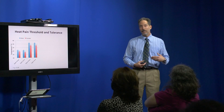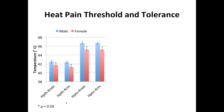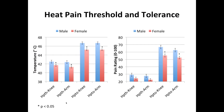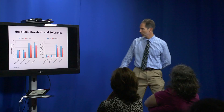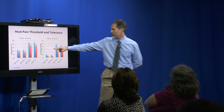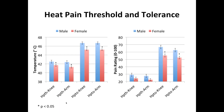We also look at heat pain threshold and heat pain tolerance: at what temperature do you first feel pain, and at what temperature do you say you're ready to stop? We see that temperatures are significantly lower for females than for males for both threshold and tolerance, at the knee and at the arm. Interestingly, women are reporting that their tolerance level was less painful than men report, suggesting that women may be pushing the button at a lower pain level—which might help explain the lower temperatures.